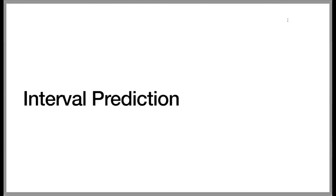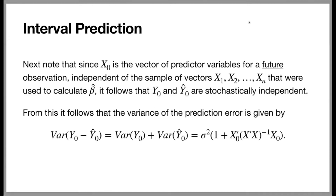Now let's look at interval prediction. Since x sub 0 is the vector of predictive variables for a future observation, which is independent of the sample of vectors x1, x2, and so forth up to x sub n that were used to calculate beta hat, it follows that y sub 0 and its predictor y hat sub 0 are stochastically independent. Because of that, the variance of the prediction error — the variance of y sub 0 minus y hat sub 0 — is given by the sum of the variance of y sub 0 and the variance of y hat sub 0. This turns out to be sigma squared times the quantity 1 plus x 0 prime times the inverse of x prime x times x sub 0.